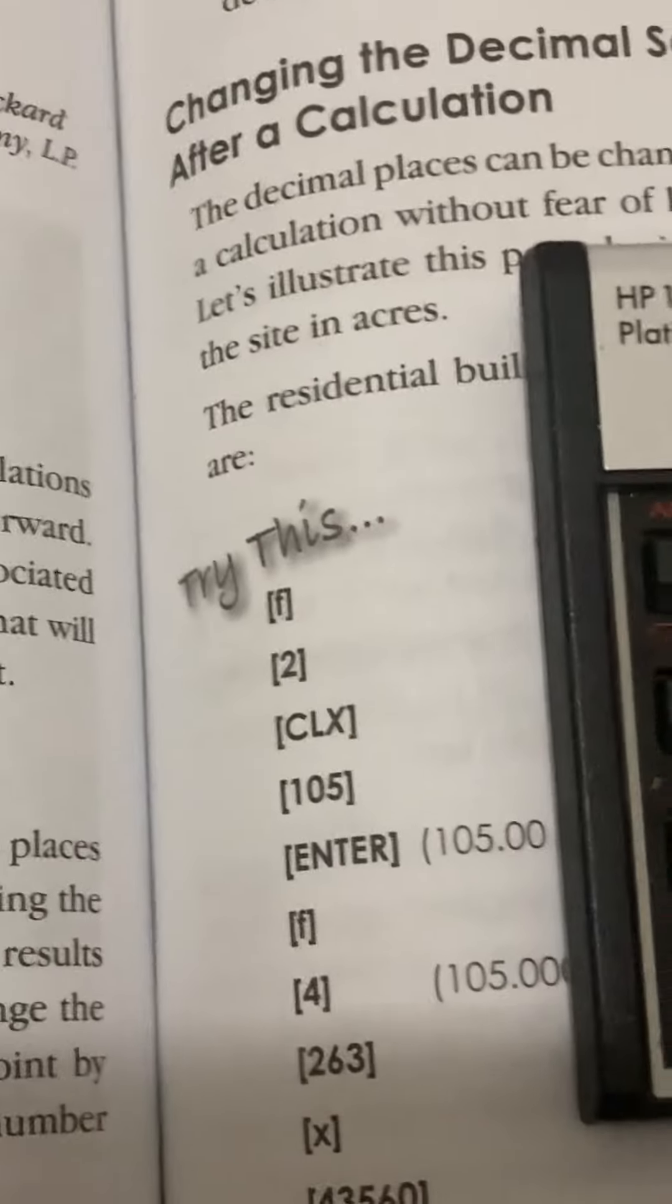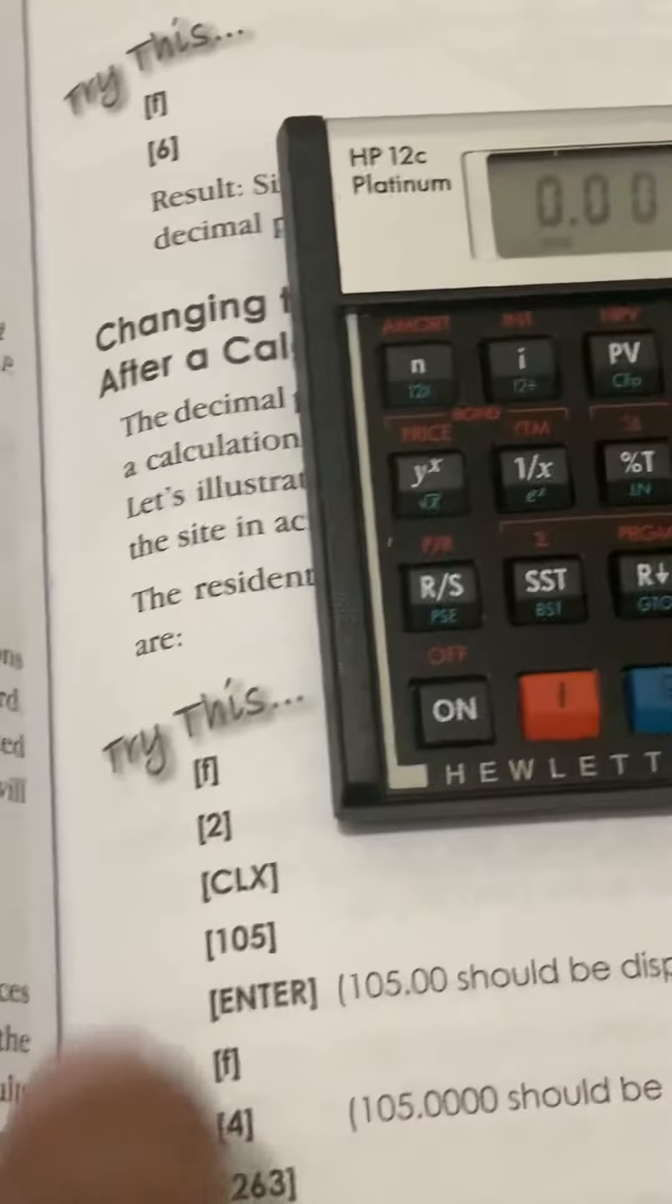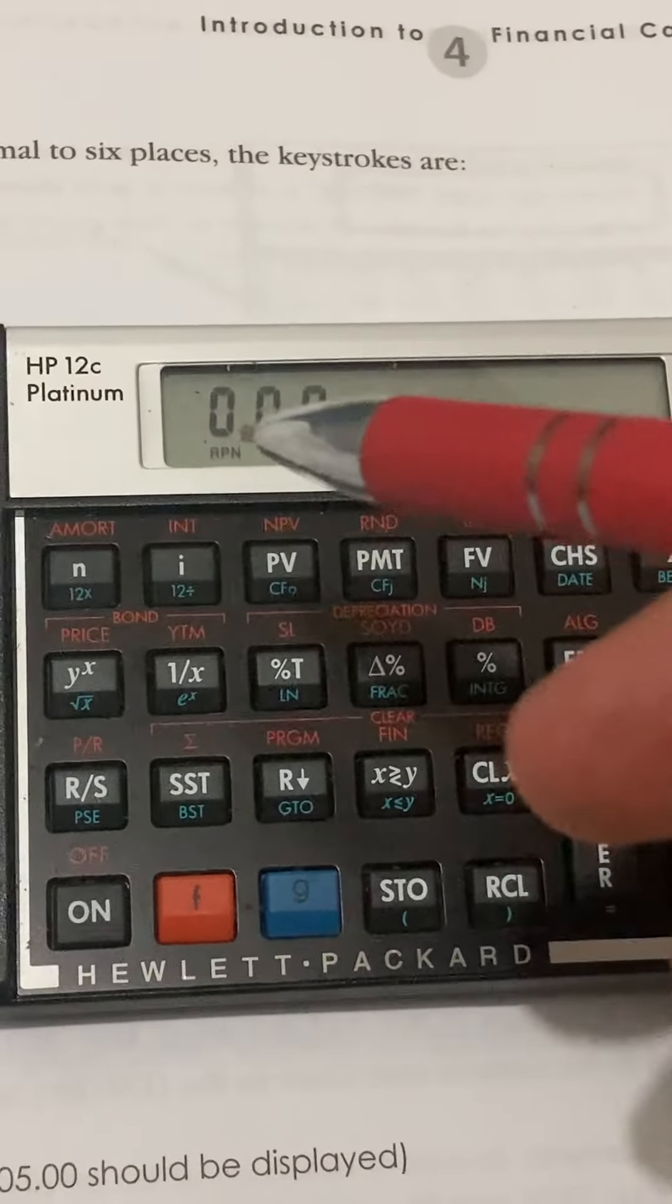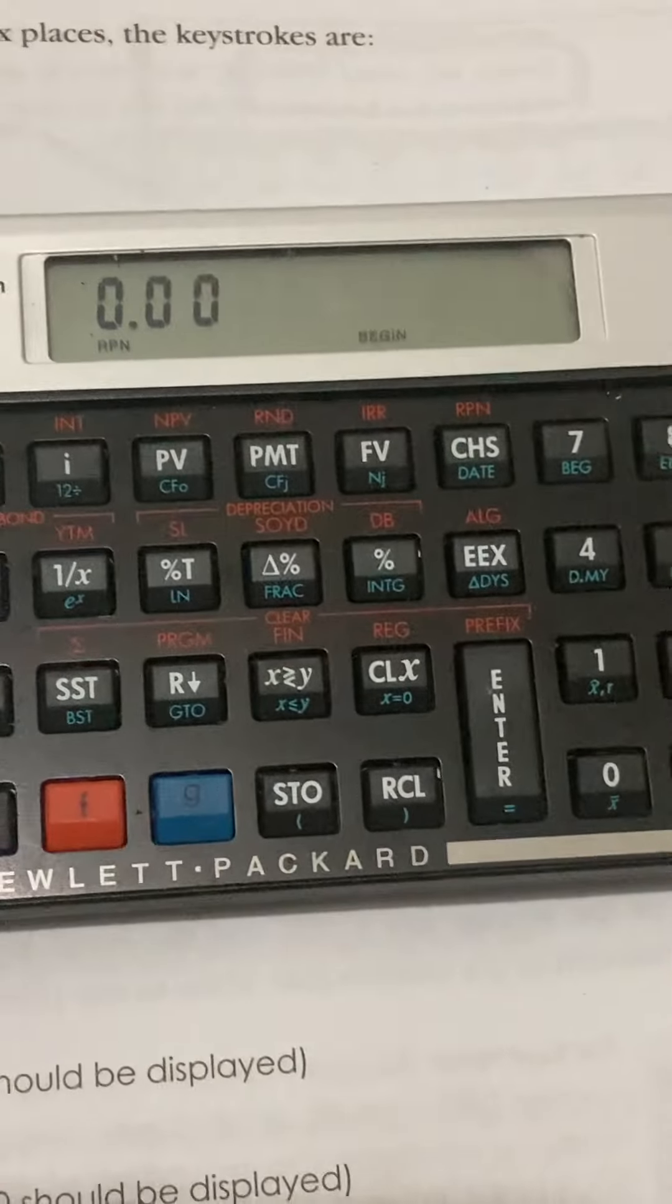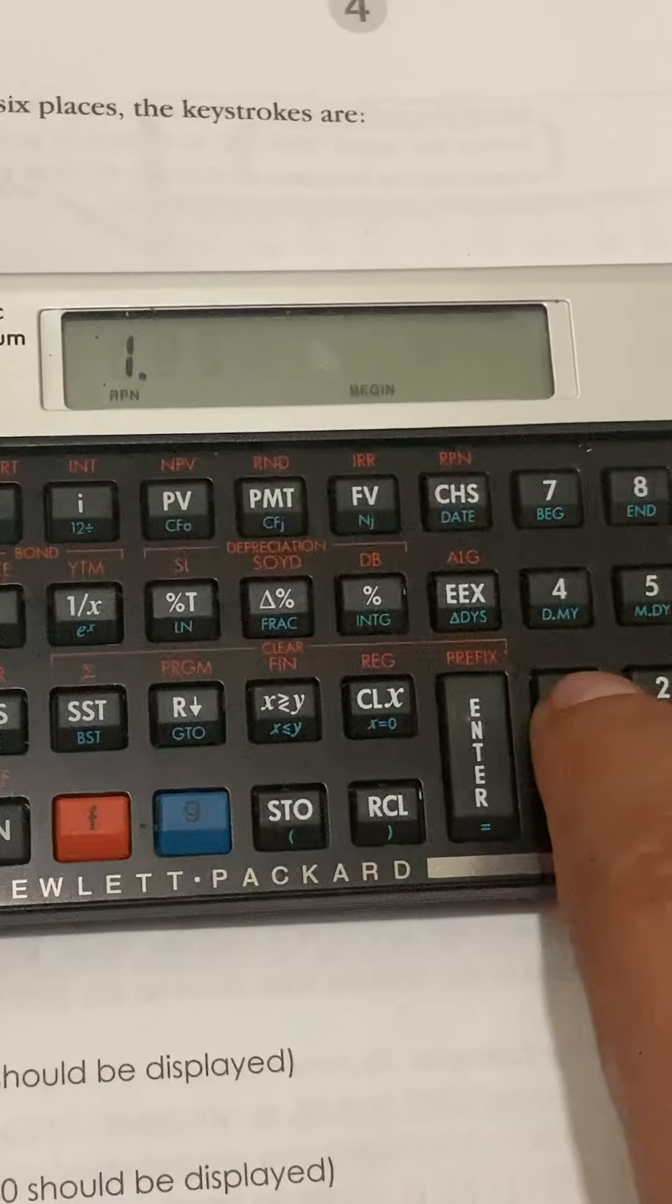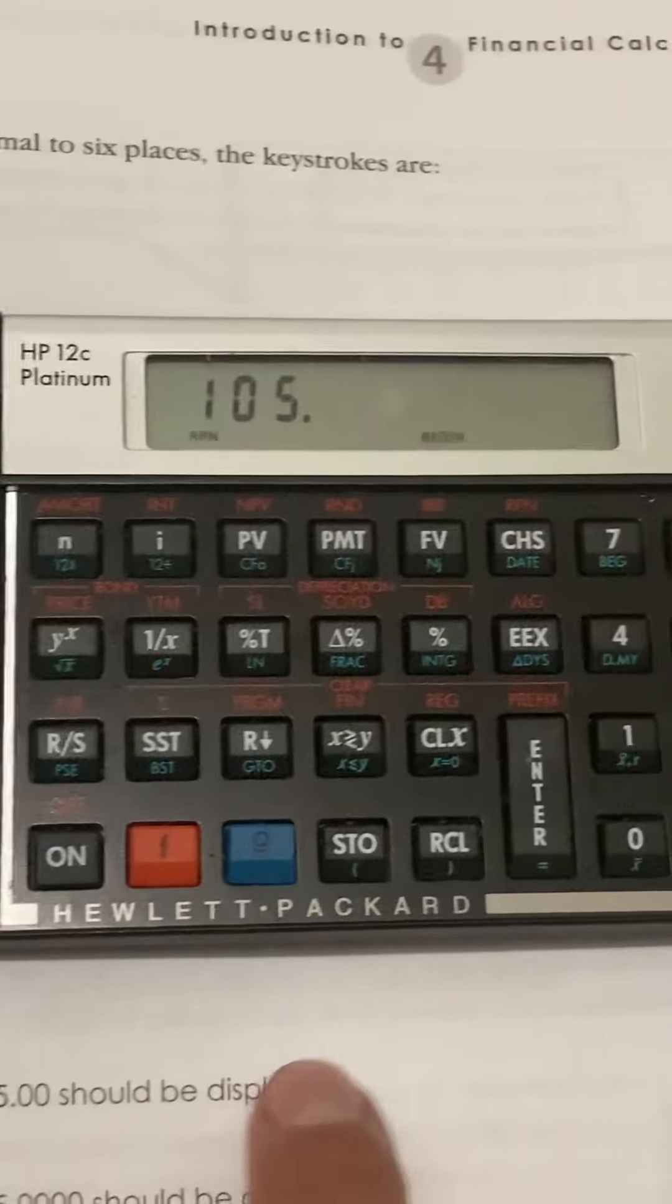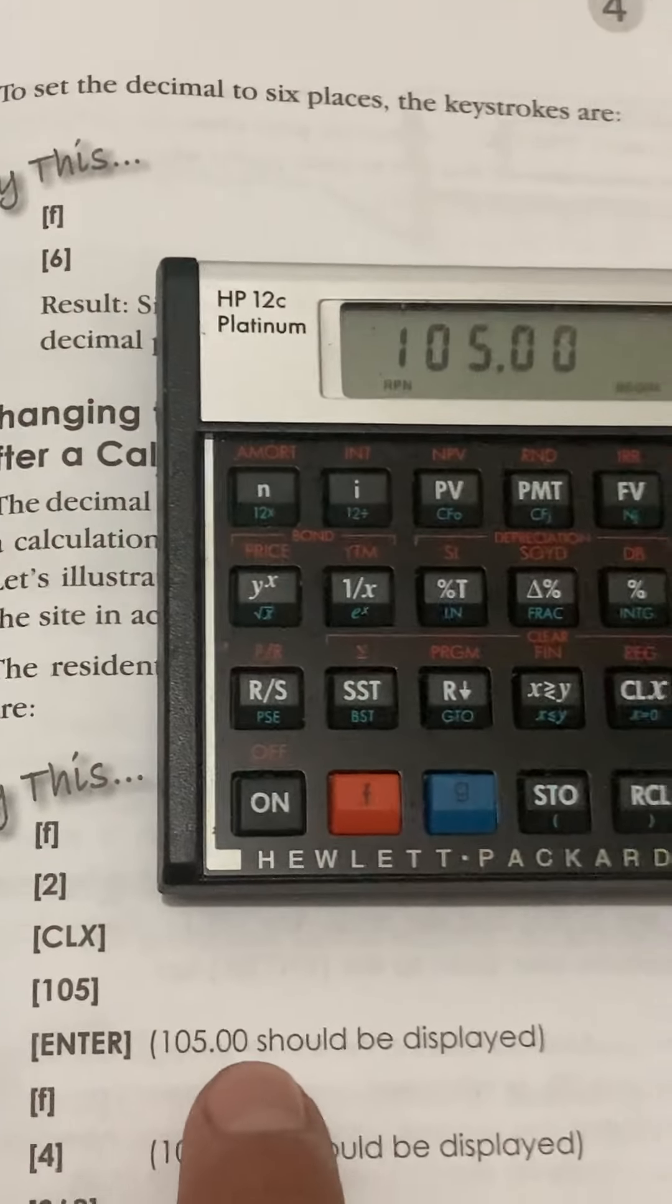Press the shift F, prefix key. There it is. It popped up right there. Press the number two. You can see that now it's decimal point zero, zero. Press CLX. That's the CLX button. Press 105. Press enter. Now it says 105.00. 105.00 should be displayed.